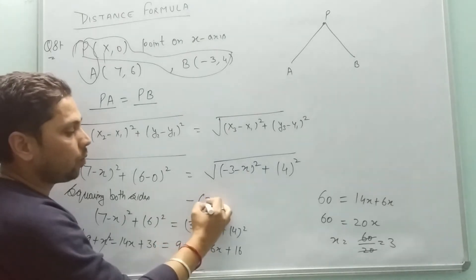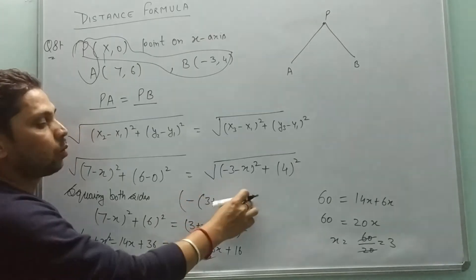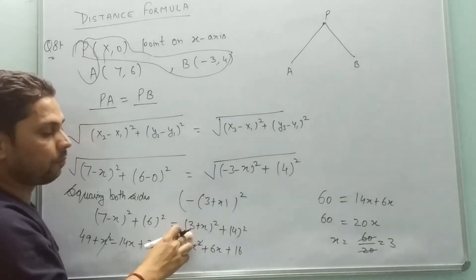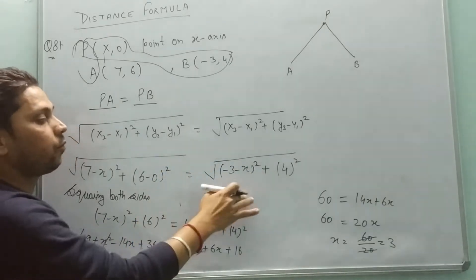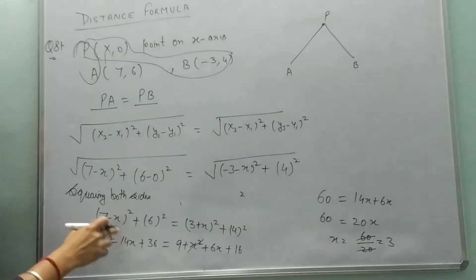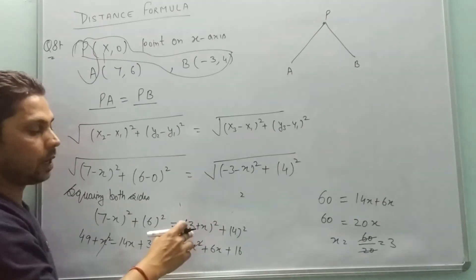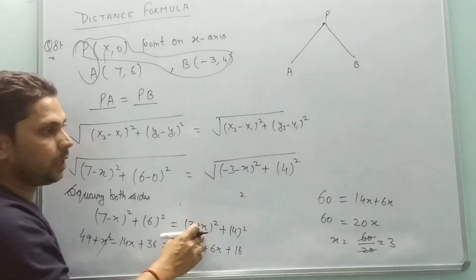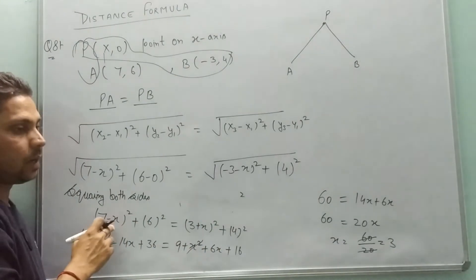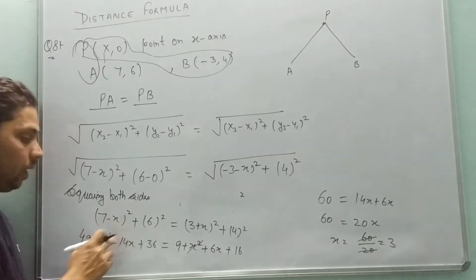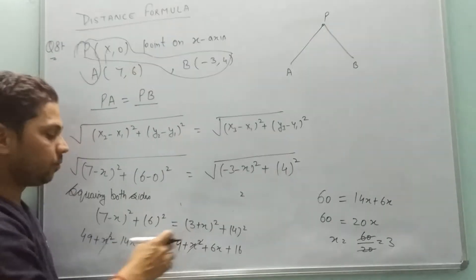Taking minus 3 as common gives (3 plus x) squared, and the minus squared becomes positive. So we have (7 minus x) squared plus 6 squared equals (3 plus x) squared plus 4 squared. Applying (a minus b) squared and (a plus b) squared identities, x squared terms cancel out.